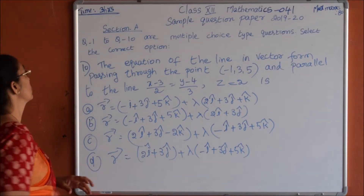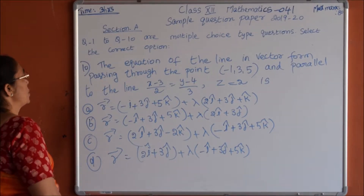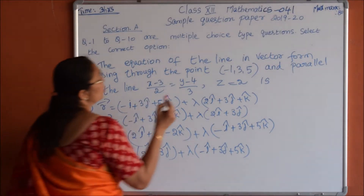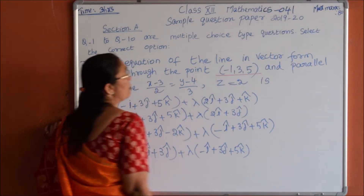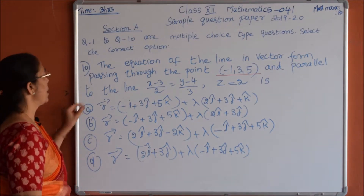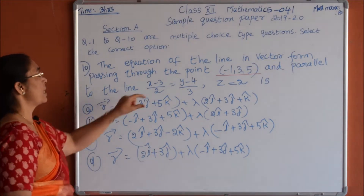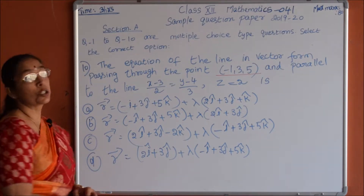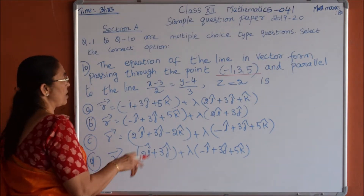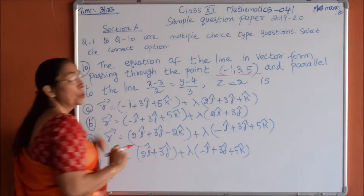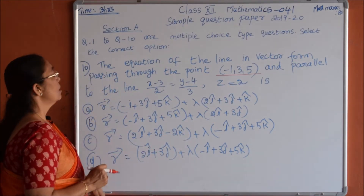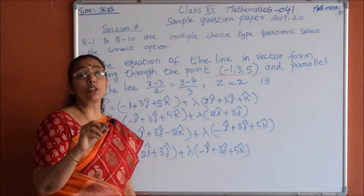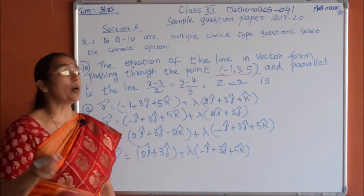Tenth question: find the equation of the line in vector form passing through the point (−1, 3, 5) and parallel to the line given in Cartesian form as x minus 3 divided by 2 equals y minus 4 by 3, and z equals 2.